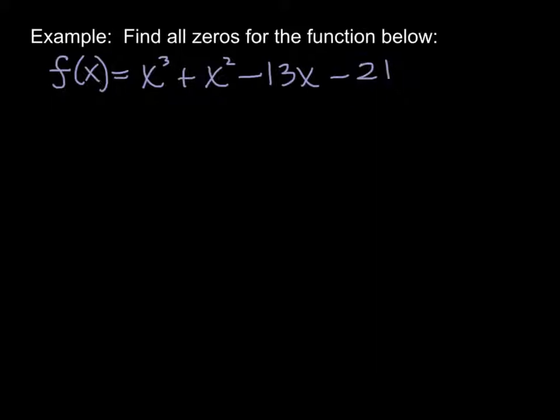We know from the fact that it's a positive x to the third how it ends. This would end by rising. This would rise to the right. So now we're going to find all the possible zeros. The first thing we need to do is really to be able to find one good zero, one rational zero.